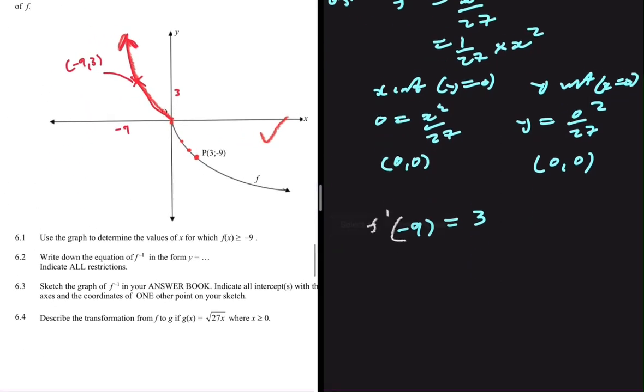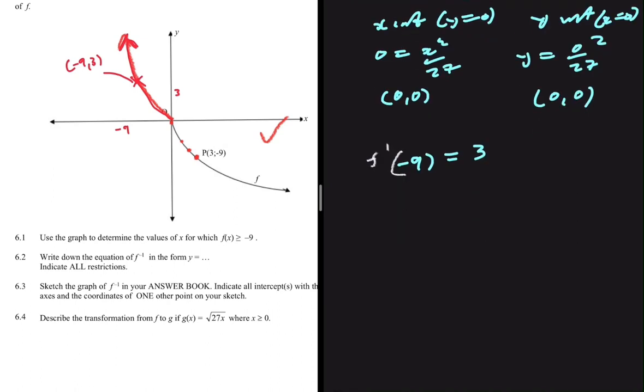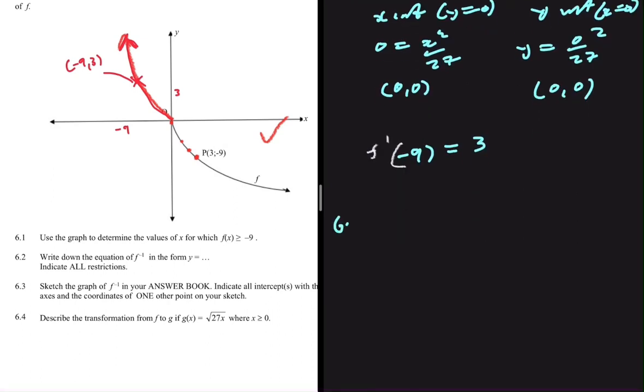Let's look at 6.4. Determine the transformation from f to g if g of x is equal to the square root of 27x. Now, what is different between g of x and f of x? The only difference we have is that we no longer have the minus sign here. So what does that tell us?